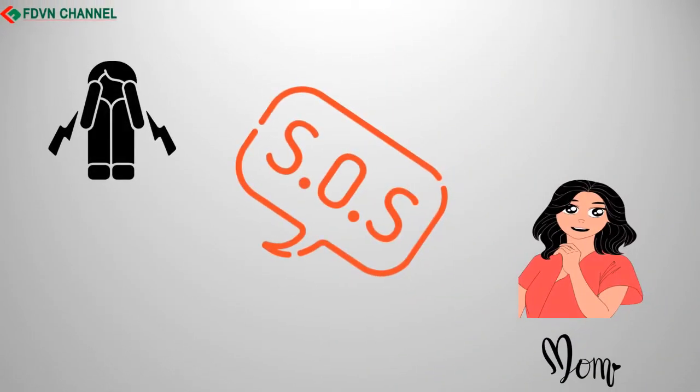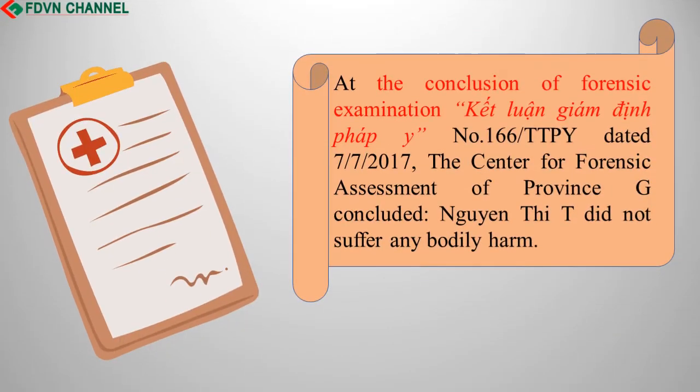After that, T told her family about being sexually abused by D. On April 3, 2017, Mrs. Tran Th., the mother of T, denounced Din Kuang D's behavior. At the conclusion of Forensic Examination No. 166-TTPY dated July 7, 2017, the Center for Forensic Assessment of Province G concluded that Nguyen T.T. did not suffer any bodily harm.